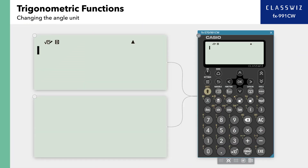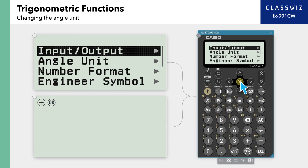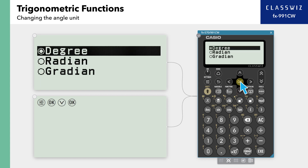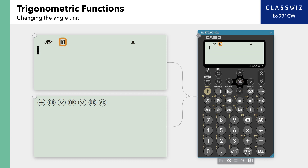Finally, let's look at changing the angle unit. To change the angle unit, press Settings while in Calculate mode. Select Calculation Settings and then Angle Unit. Angle units include Degree, Radian, and Gradient. Here, select Radian. Press AC to return to the Calculation screen.